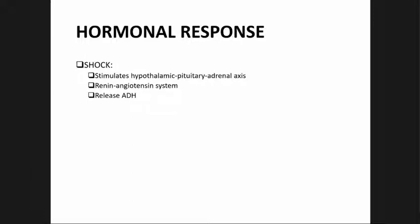The hormonal response to shock stimulus: the hypothalamic-pituitary-adrenal axis releases ACTH from the pituitary. ACTH stimulates the adrenal cortex to release cortisol. Cortisol stimulates gluconeogenesis and insulin resistance. In the setting of severe hypovolemia, ACTH secretion occurs independently of cortisol's negative feedback inhibition. Then we have the renin-angiotensin system.